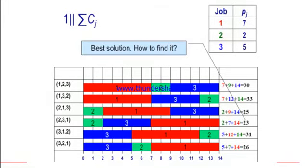For single machine total completion time, if we have three jobs—job one, job two, and job three—and the processing time for job one is seven hours, two hours for job two, and five hours for job three.